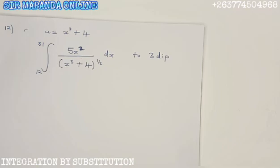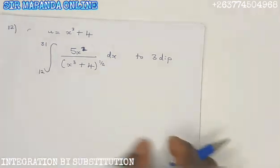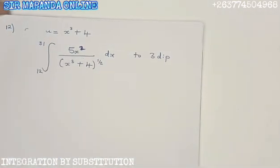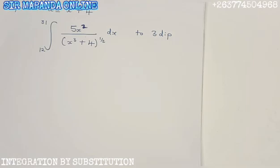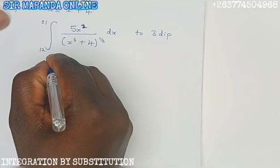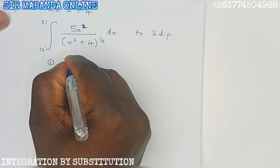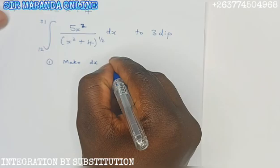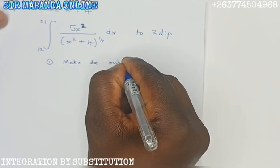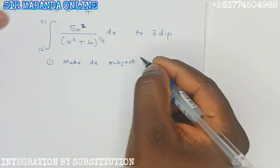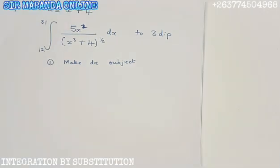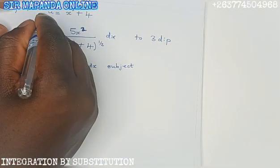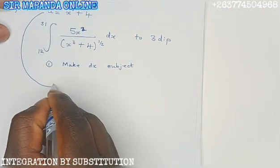8 marks. For this question of substitution, you follow the stages. We have stage 1. On stage 1, the goal is to make dx the subject of formula. To make dx the subject of formula, you simply differentiate the given substitution.